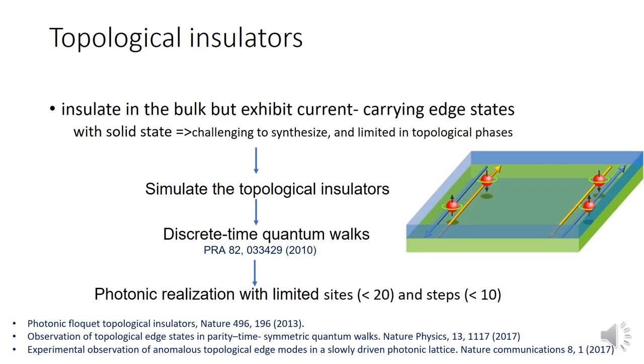Topological insulators are a new class of quantum materials that insulate in the bulk but exhibit robust topologically protected current across the edge. These materials are challenging to synthesize with solid-state materials, which has motivated the search for topological phases on systems that simulate the same principles. Discrete-time quantum walk has been proposed for making Floquet topological insulators.